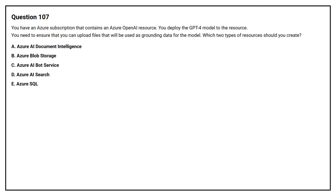Question number 107. You have an Azure subscription that contains an Azure OpenAI resource. You deploy the GPT-4 model to the resource. You need to ensure that you can upload files that will be used as grounding data for the model. Which two types of resources should you create?